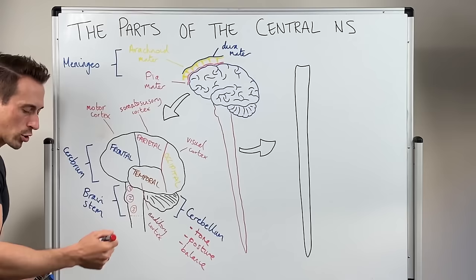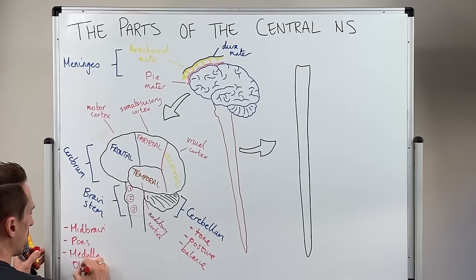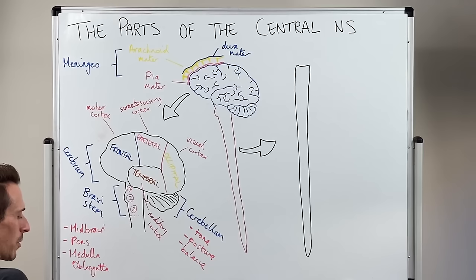So what are these three parts? Well, the first part is what we call the midbrain. The second part is what we call the pons. And the third part is what we call the medulla oblongata, also just known as the medulla.